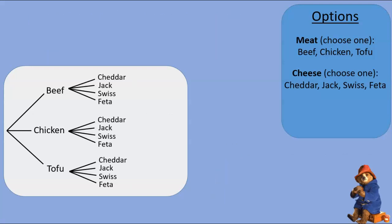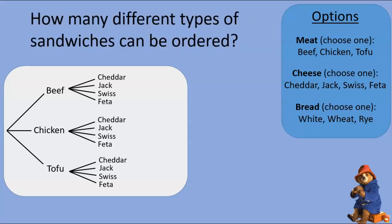Let's alter the problem a little bit. Now the sandwich shop decides to let customers choose the type of bread as well — white, wheat, or rye. Each path through the previous tree now sprouts three more branches from its endpoint. If you chose chicken and cheddar, now you'd also have to specify your choice of bread. This happens at every endpoint, though I'm not going to put them all on the diagram because it would be far too messy.